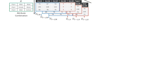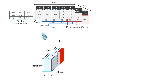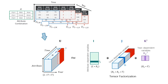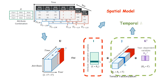Using tensor factorization, we obtain three latent variables: attribute dependent, date dependent, and year dependent. A spatial model is designed to generate the latent metric, while a temporal model handles the time-related tensor.